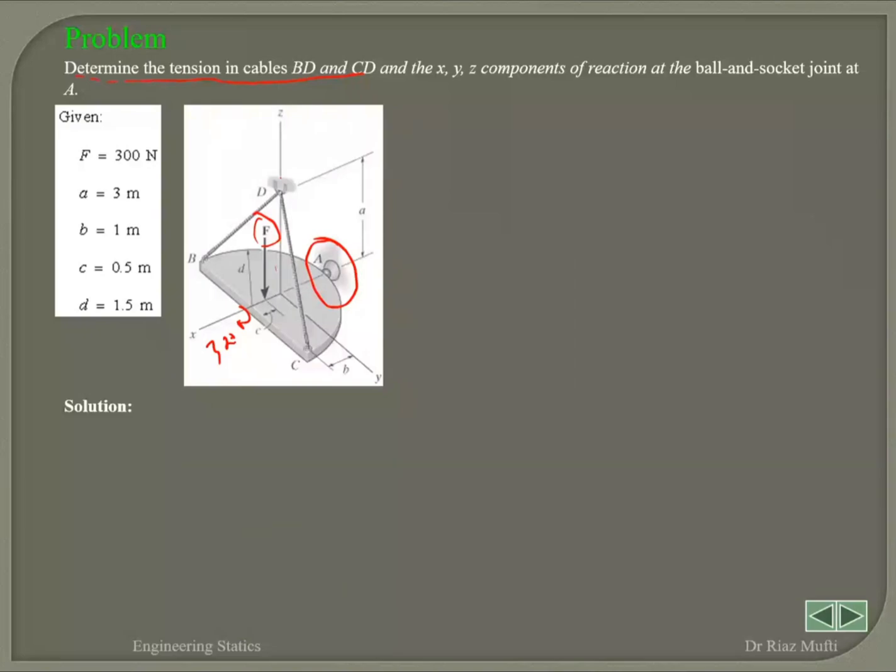You need to draw the free body diagram of the platform. Draw that and then tell me how many active reactive forces we've got.